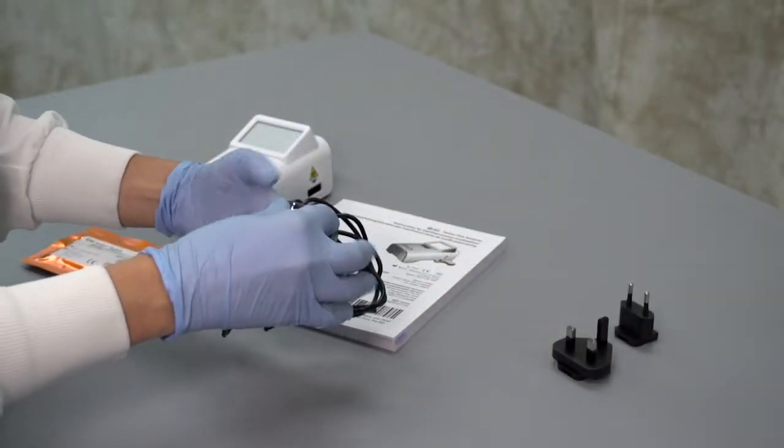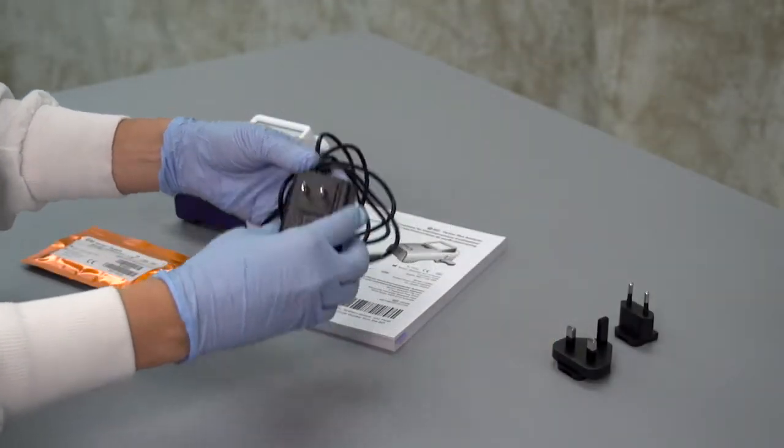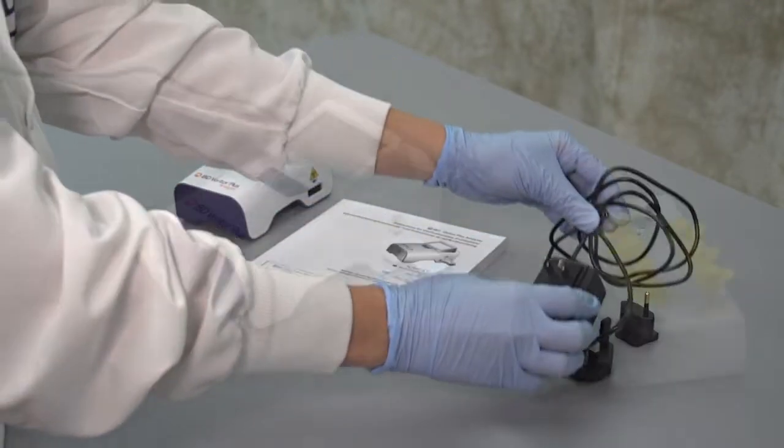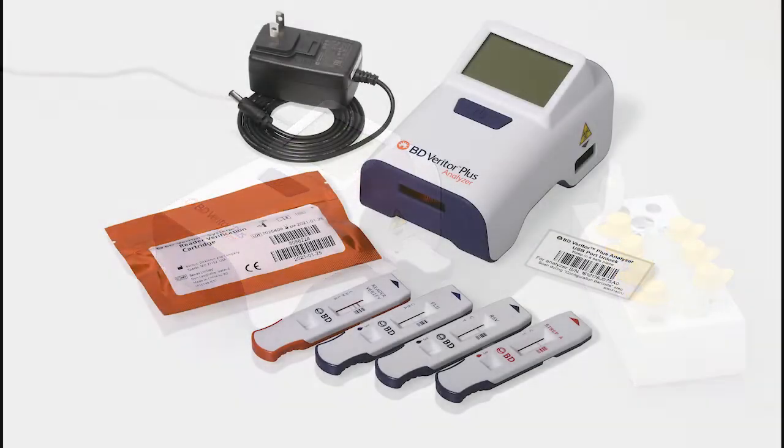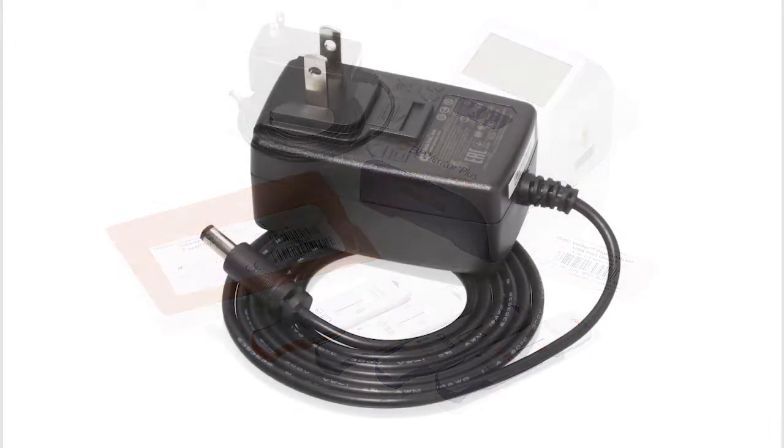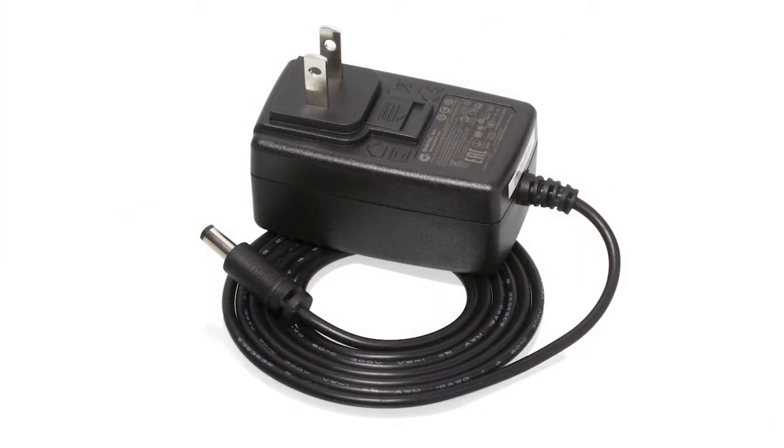First, select and install the correct country-specific power adapter. The BD Veritor Plus Analyzer should be charged using the power cable upon unboxing and anytime power gets low. The power cable is also used for walk-away mode testing, which will be covered later in the video.